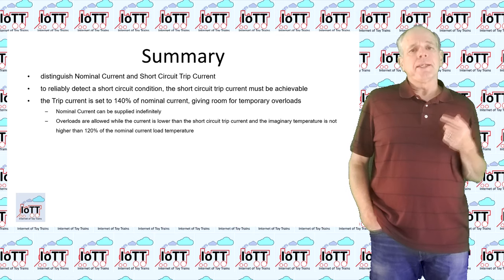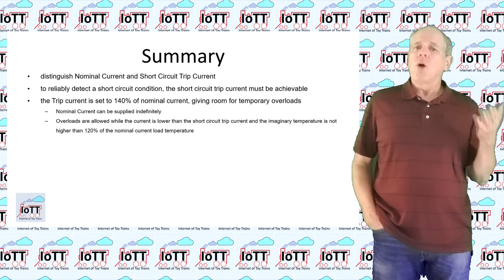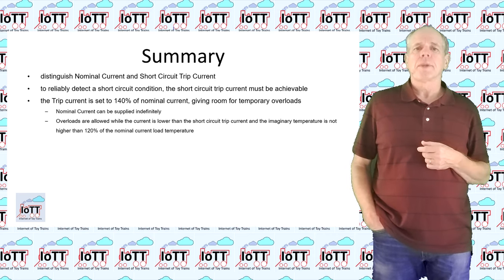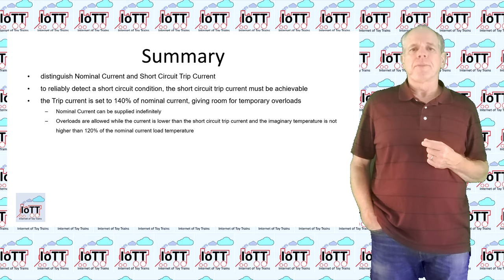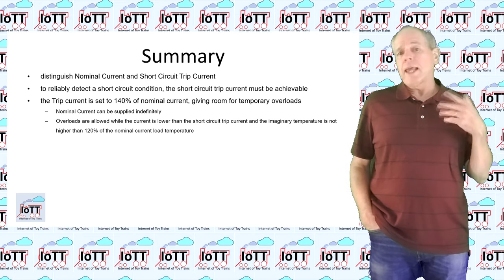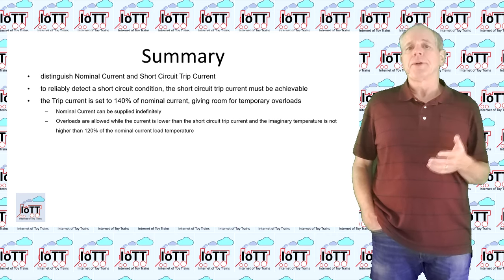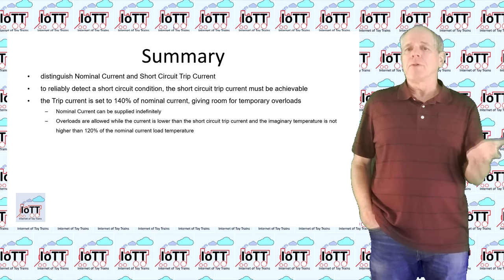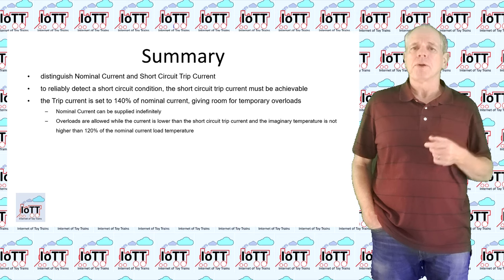The trip current is set to 140% of nominal current, opening up a range for dealing with temporary overloads. The nominal current can be supplied indefinitely. Overload is allowed as long as the current is lower than the short circuit trip current, and the imaginary temperature is not higher than 120% of the temperature at nominal current load.